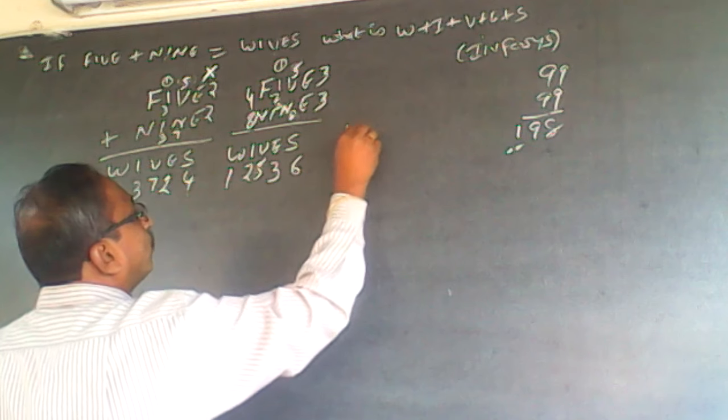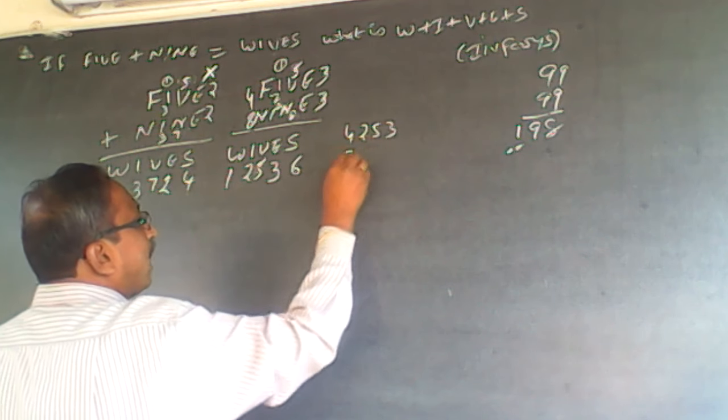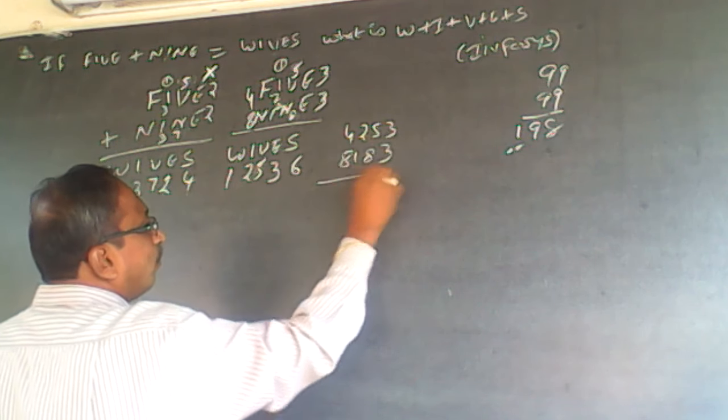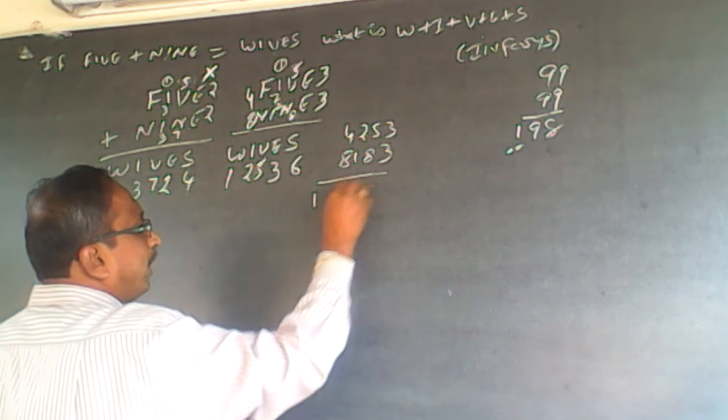So 4, 4, 2, 5, 3 plus 8, 1, 8, 3 will be 1, 2, 5, 3, 6.